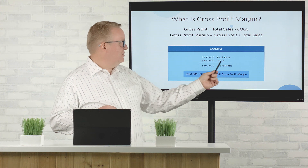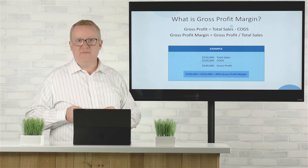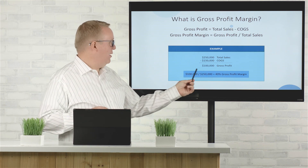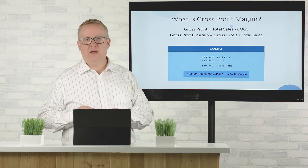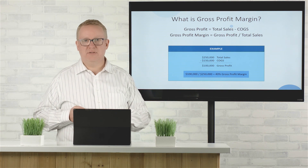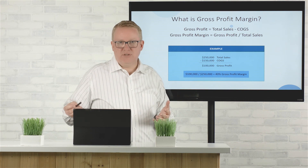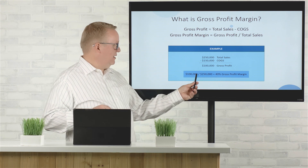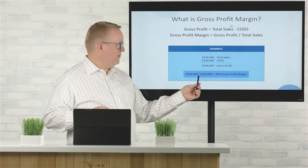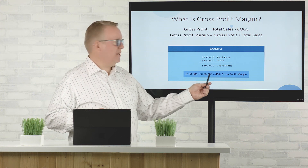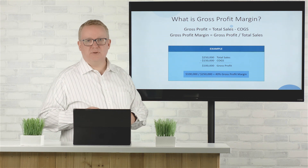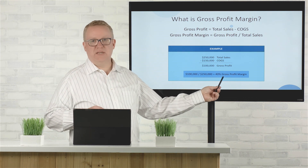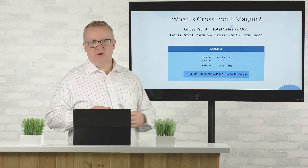My cost of goods sold was $150,000 and so my gross profit ended up being $100,000. To get my gross profit margin I take that $100,000 of gross profit divided by the $250,000 in total sales. That gives me a 40% gross profit margin.